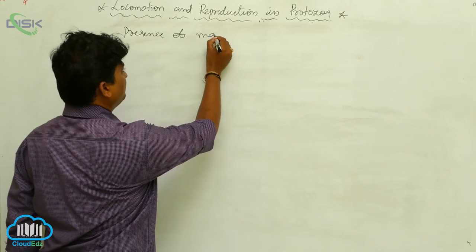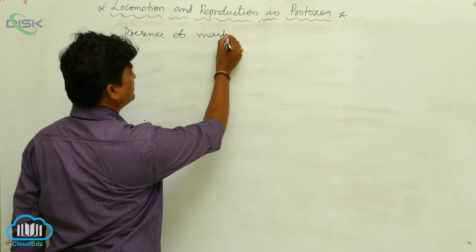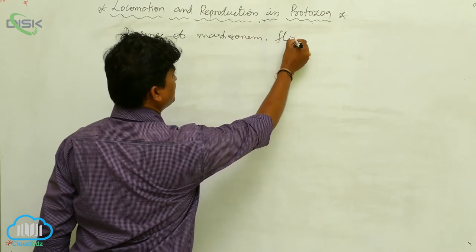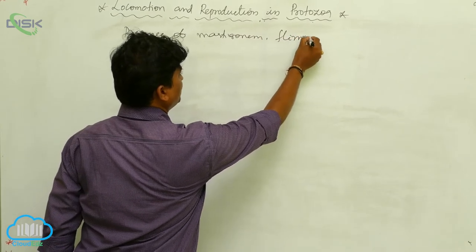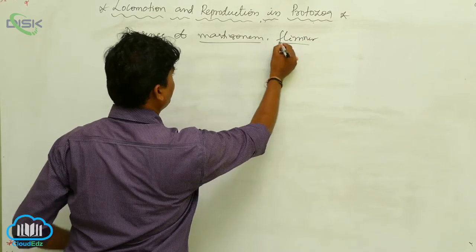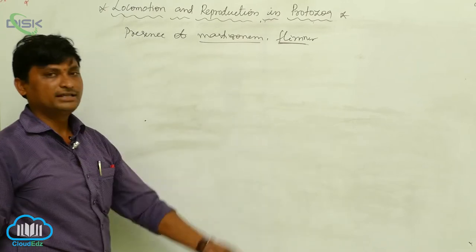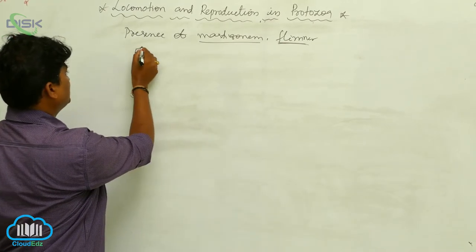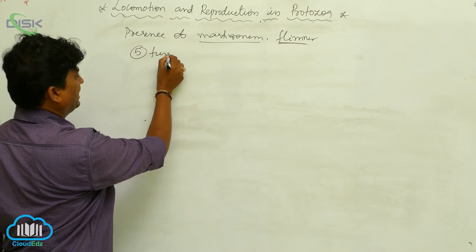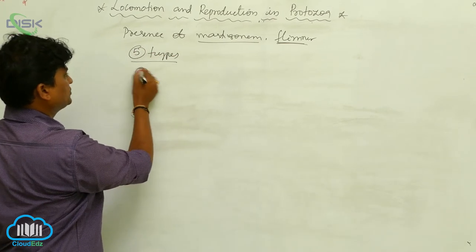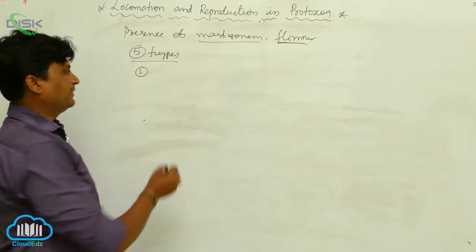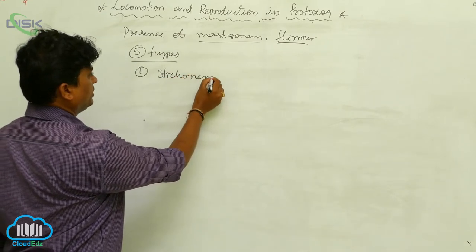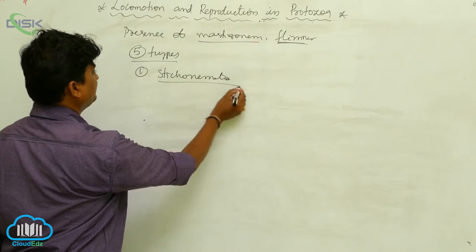The presence of mastogonyms and flimmers — hair-like projections — on the flagella side divides flagella into five types. The first one is stichonimatic.